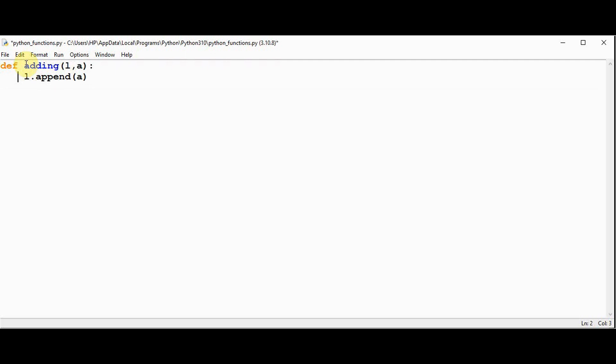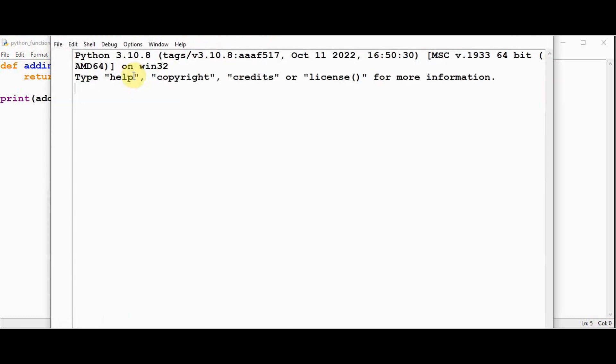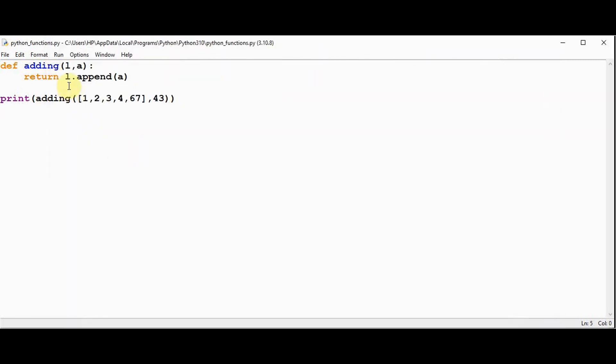If I try to return keyword here and when I'm calling this function adding, I'm passing the list directly and the element to be added. When we execute we get None as the output because this l dot append method doesn't return anything.